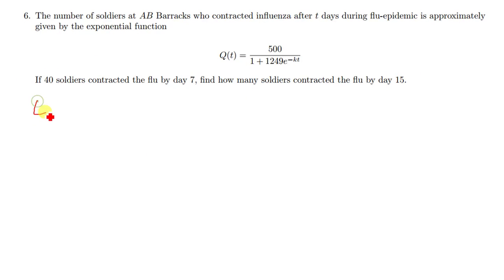So let's quickly do that. Where there is Q(t) we put 40, and where there is t we're going to put 7. So we have 40 equals 500 over 1 plus 1249e to the negative 7k.